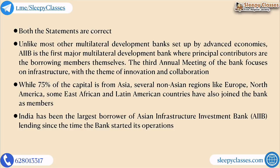Usually in multilateral development banks, advanced economies (first world countries) set up funding, and these development banks then extend loans to developing or underdeveloped countries. But in AIIB, it is the developing nations themselves who came together to create it. That is why its members are also its borrowers, and around 75% of the capital is from Asia, while the remaining capital is from non-Asian regions like Europe, North America, East Africa, and Latin American countries. India is the largest borrower of AIIB.